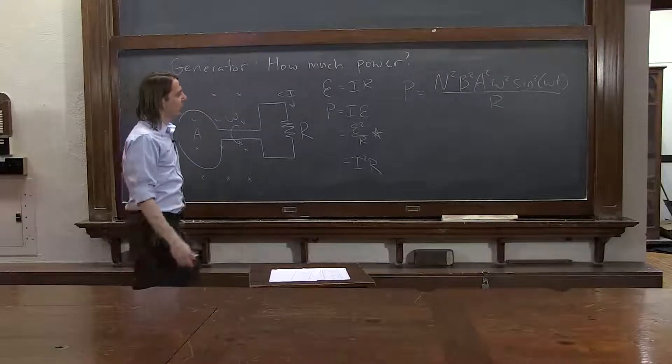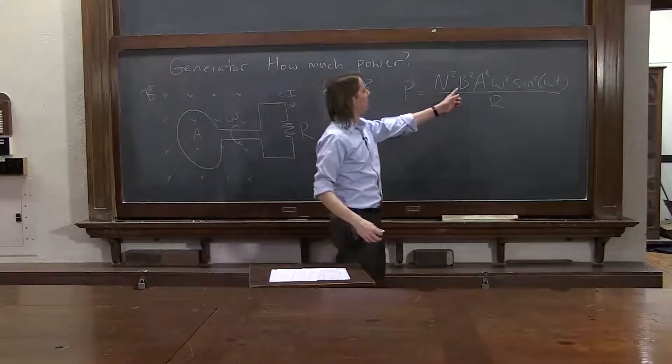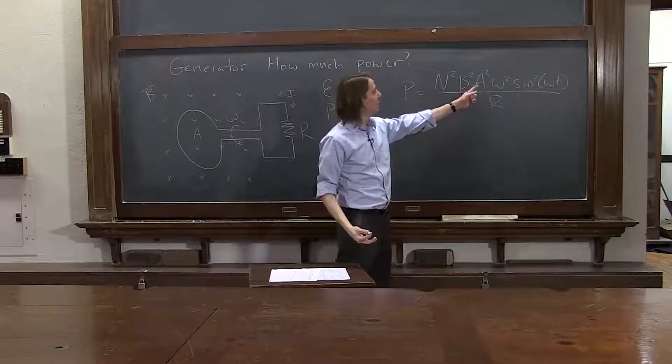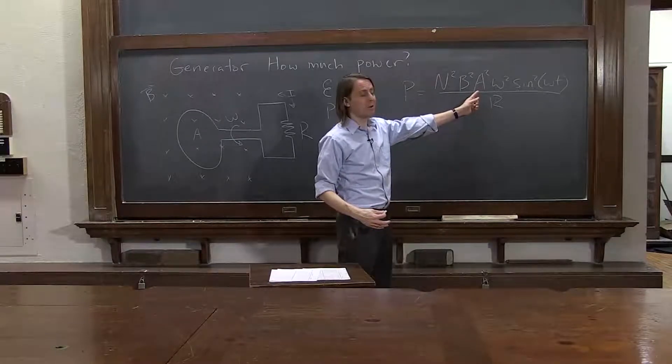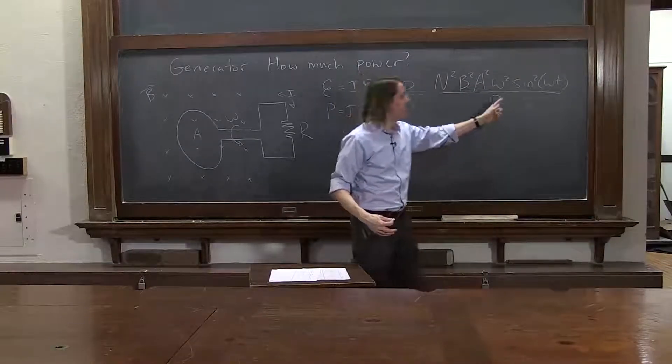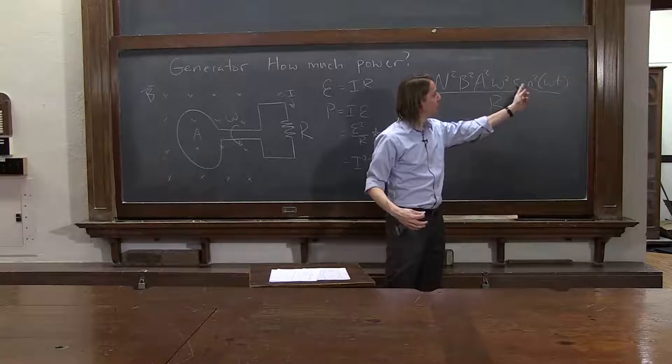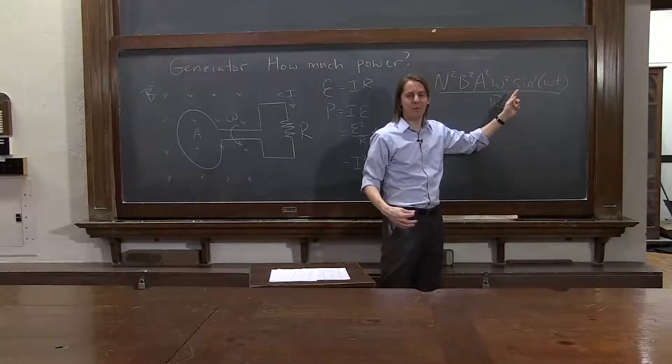So everything there kind of makes sense. If you had more coils, you'd get more power. If you had a stronger B field, more power. Bigger loop in the generator, more power. Go faster, more power. It should always be positive. Thank goodness we squared the sine. It'll always be positive.